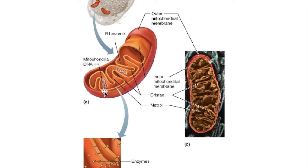If you have oxygen present, you can produce 32 ATP per glucose molecule. If you do not have oxygen present, it's called anaerobic respiration. Respiration is basically the ability of a cell to create power for itself. Respiring in the presence of oxygen is called aerobic respiration, which is much more efficient at 32 ATP per glucose. Without oxygen it's called glycolysis, and you only produce 2 ATP per glucose. So the mitochondria produce ATP — the powerhouse of the cell.